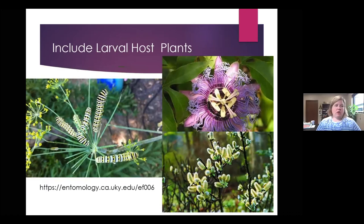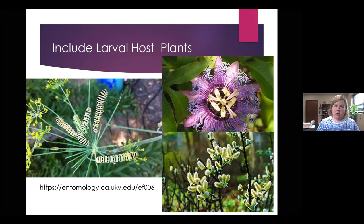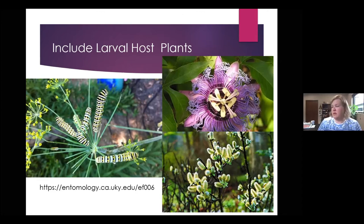Think about larval host plants. I have a list at the end. It includes what the larvae or caterpillars eat, because sometimes you'll have adults that just come through and go away. You may need to add dill for swallowtail butterflies, or pussy willow, because that's what some larvae eat. There's also a specific caterpillar for passion flower vine. You may have to plant some shrubs and trees to attract special butterflies. I have a pipevine in my garden to attract the pipevine swallowtail, and sassafras to attract other kinds.